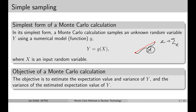As you can see, even in this simple problem the numerical model is dependent on two random variables. For the sake of simplicity, let's assume that this numerical model g is dependent on a single random variable. The simple sampling technique generates values of the input random variable, evaluates the numerical model for each value of the input variable, and this way calculates the result.